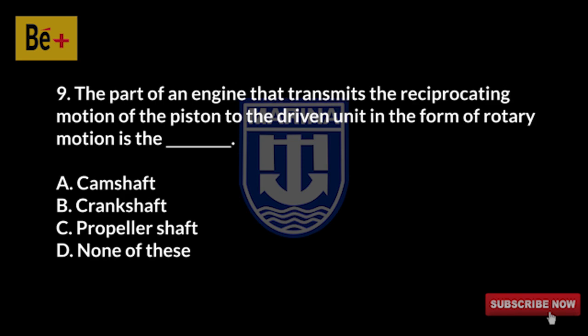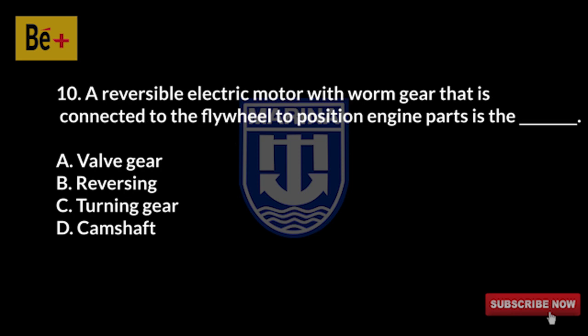The part of an engine that transmits the reciprocating motion of the piston to the driven unit in the form of rotary motion is the: A) camshaft, B) crankshaft, C) propeller shaft, D) none of these. The answer is B, crankshaft.